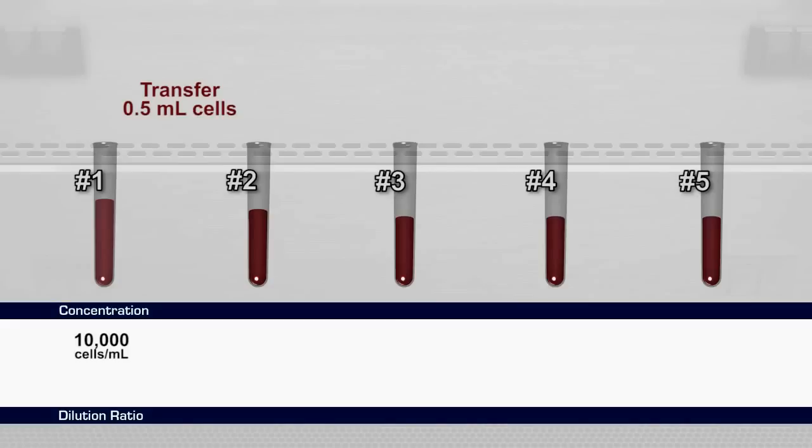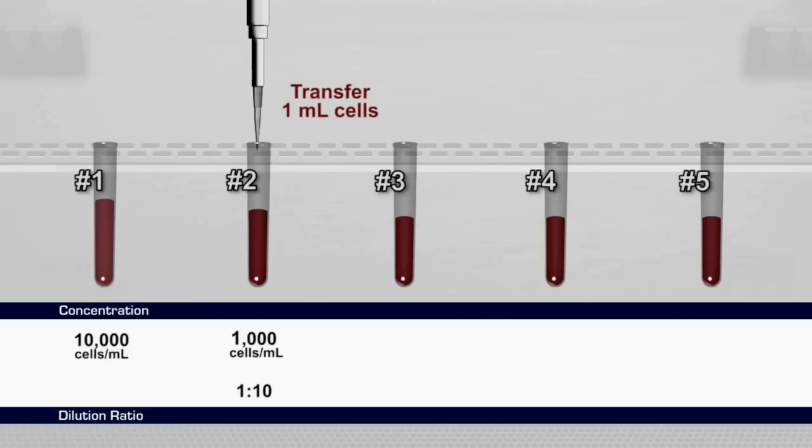Use a micropipet to remove 0.5 milliliters of the cell suspension from tube number 1 and transfer it to tube number 2 for a 1 to 10 dilution. The cell concentration of tube number 2 is now 1,000 cells per milliliter. Let's dilute the concentration again. Transfer 1 milliliter from tube number 2 to tube number 3 for a 1 to 5 dilution and a concentration of 200 cells per milliliter.